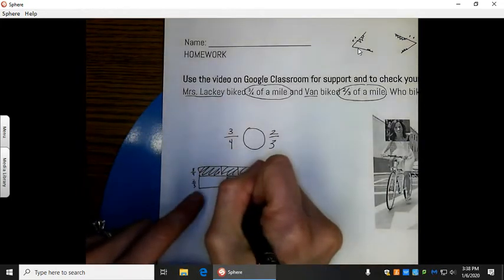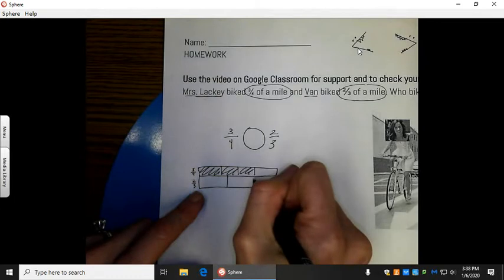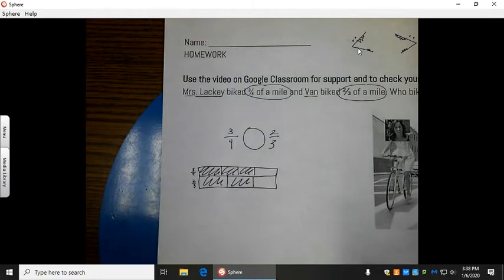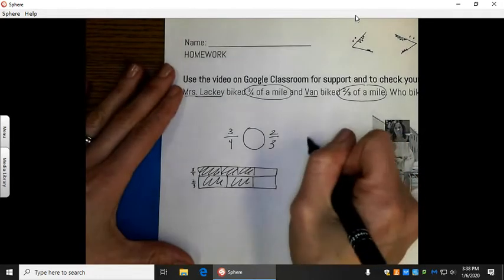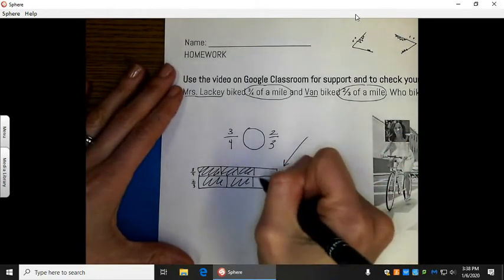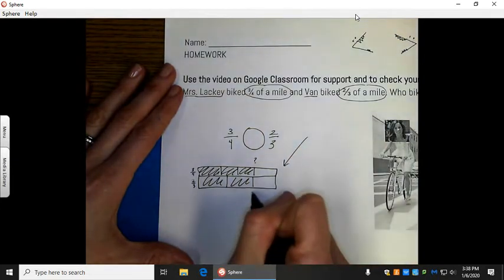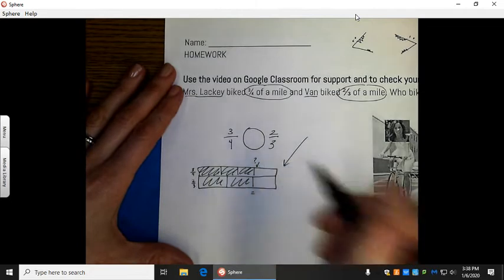And this one's going to be thirds. So, one, two, one, two, two-thirds. Now, my problem with just using a model is that these look really close. So, I'm still wondering, wait, are they equal? Or is this one a little bigger? I'm not sure.